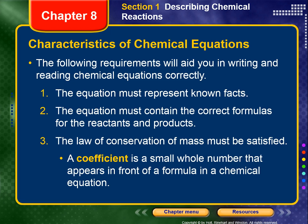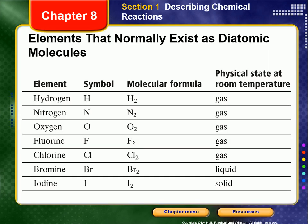We are going to use something called a coefficient. A coefficient is a small whole number that appears in front of a formula in a chemical equation. We also want to remind ourselves of the diatomic molecules — all of the hydrogen and all of the halogens. Remember all of the '-gins': hydrogen, nitrogen, oxygen, and all of the halogens.